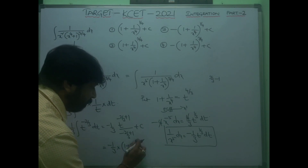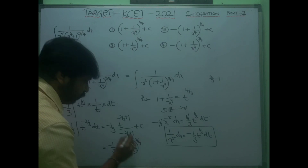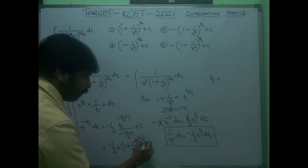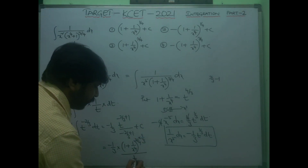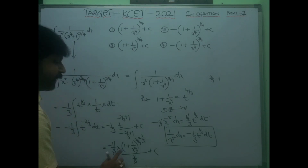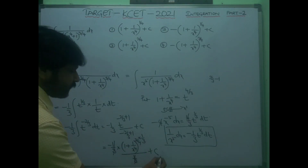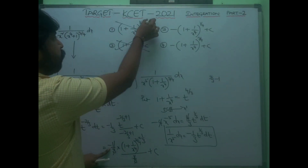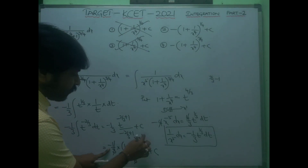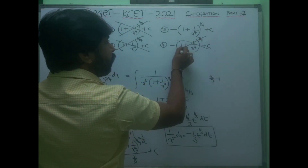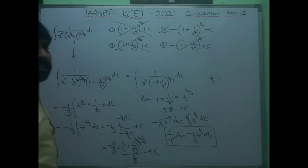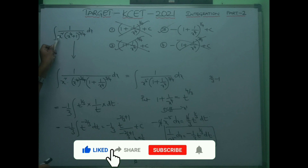The negative-related answer corresponds to the second option: −(1 + 1/x⁴)^(1/4) + C, which is the correct answer. It's a very easy technique — you just take x⁴ as common and the answer follows.